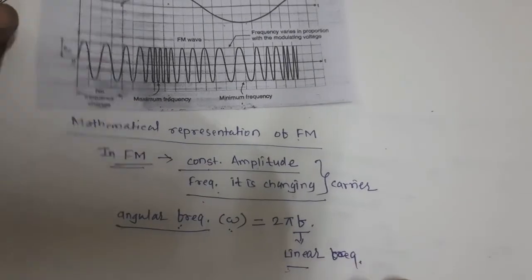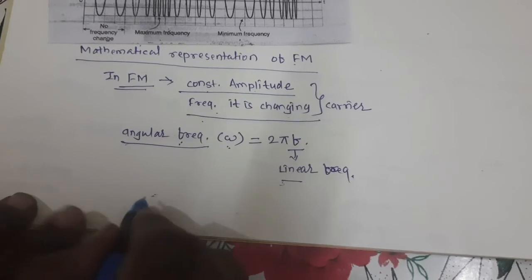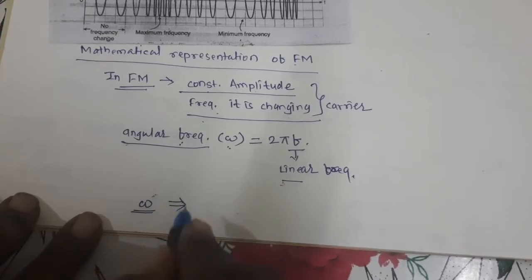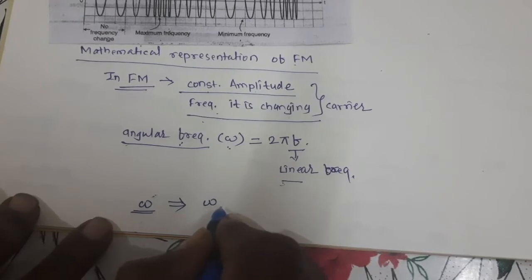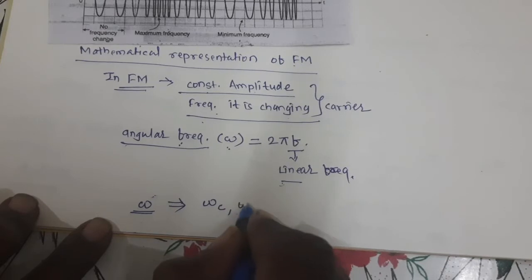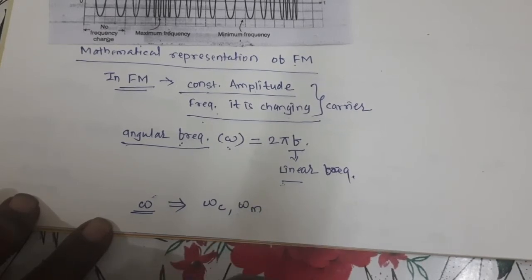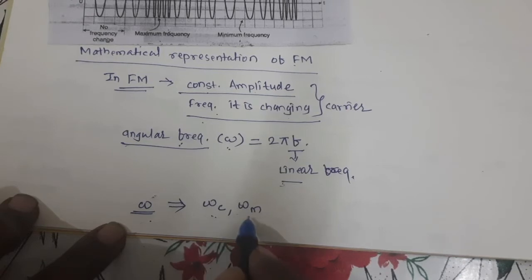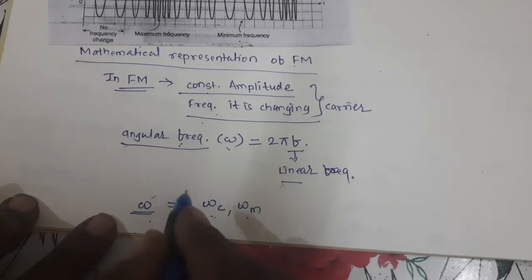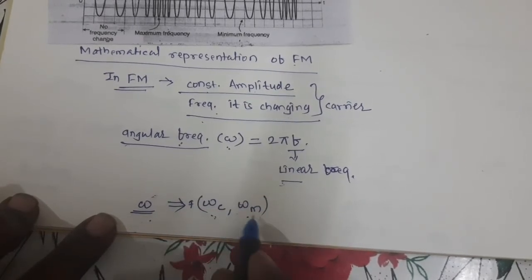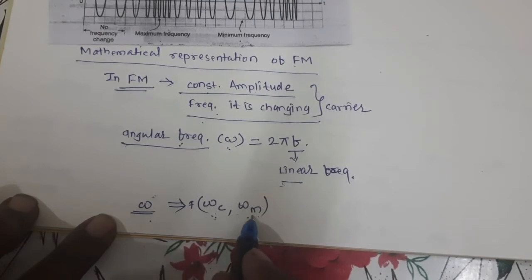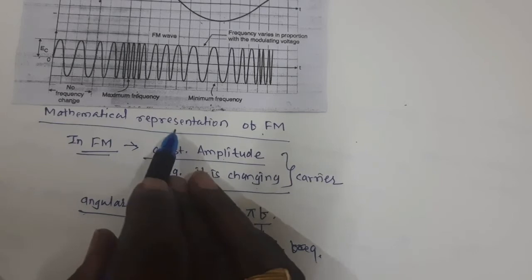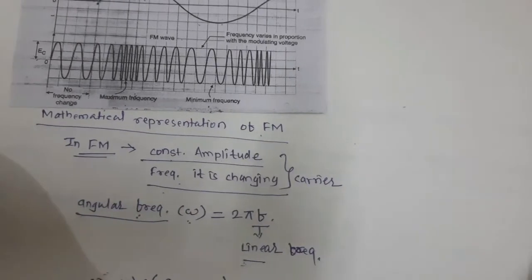Whatever the angular frequency in FM — if the angular frequency in FM is omega — then this omega is a function of two different angular frequencies: the carrier angular frequency and the modulating signal angular frequency. We can say that omega is a function of the angular carrier frequency and the modulating angular frequency. These two terms are very important while deriving the mathematical equation for the representation of a frequency modulated wave.